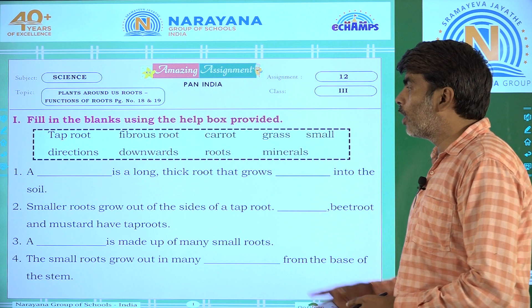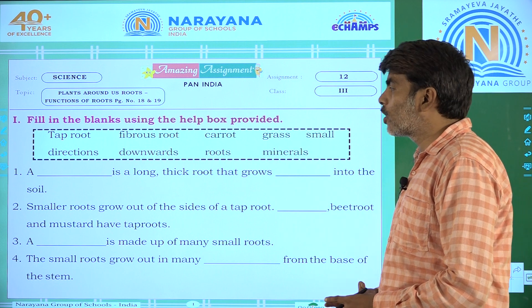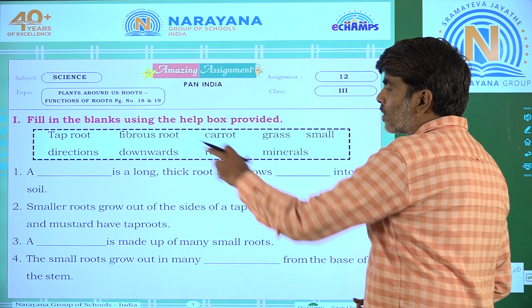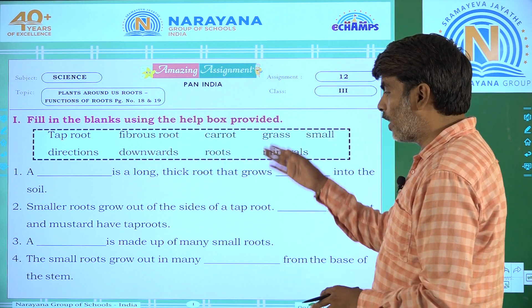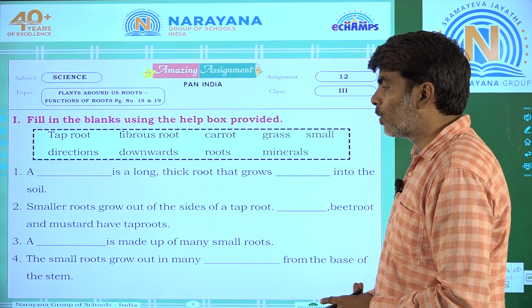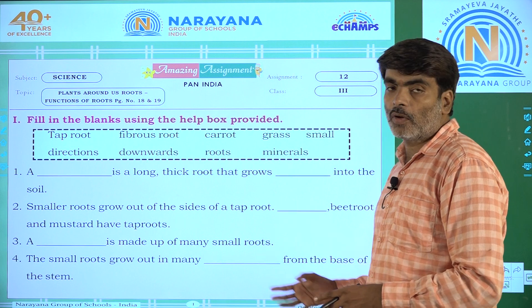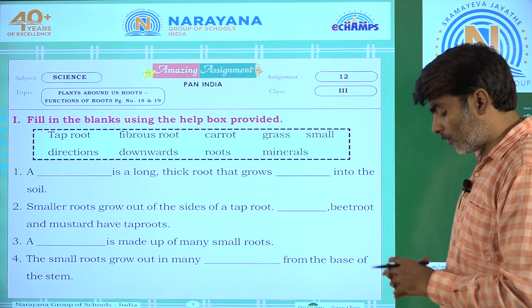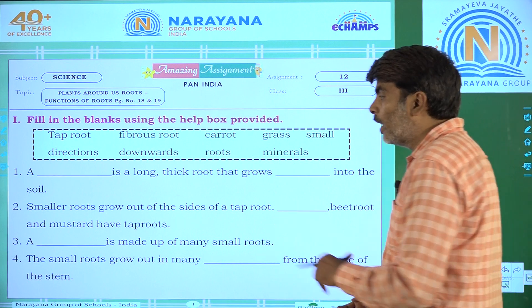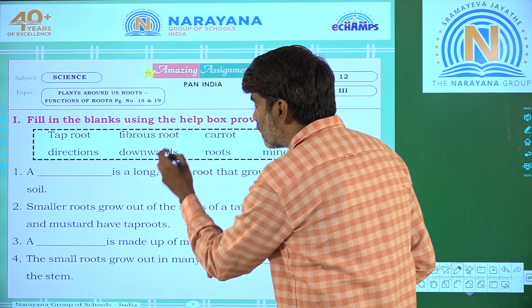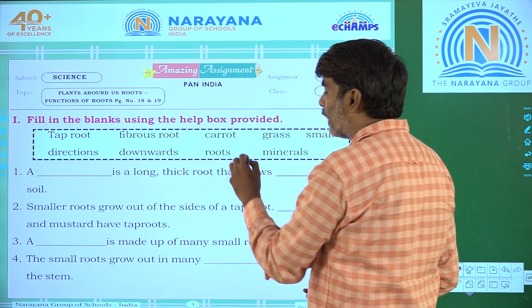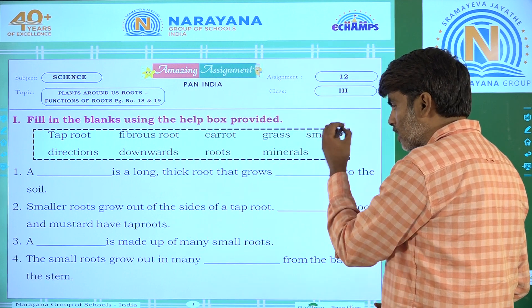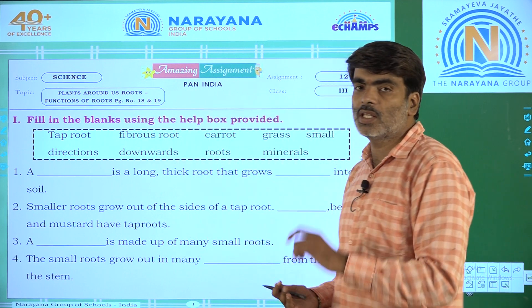We will continue. We have the first task here. A word box is provided and we have to fill the suitable words in the provided blanks. Let us start with our first question: A dash is a long thick root that grows dash into the soil.